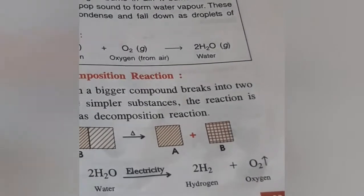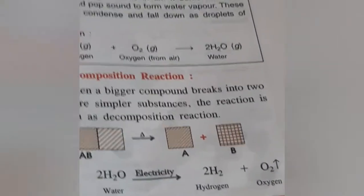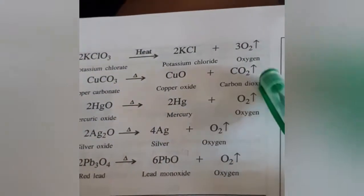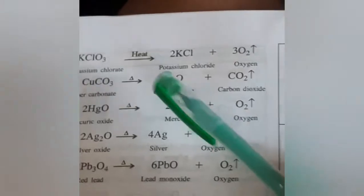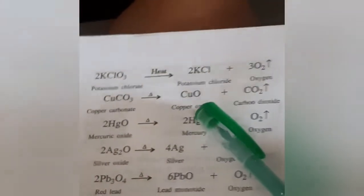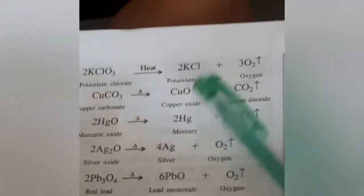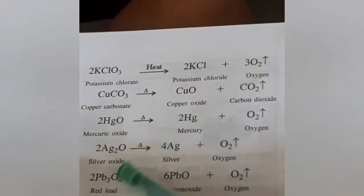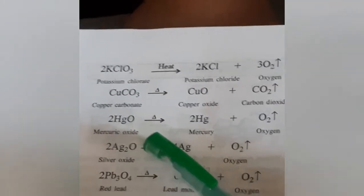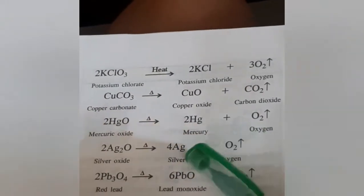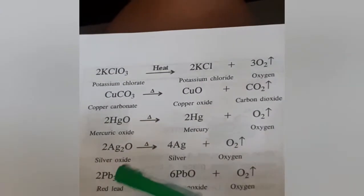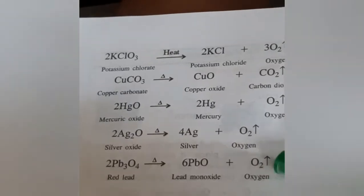These atoms break down and their reactions are changed. Other examples: potassium chloride on heating produces potassium chloride alone and oxygen alone. Copper carbonate on decomposition forms copper oxide alone and carbon dioxide alone. Mercuric oxide on decomposition forms mercury and oxygen. Silver oxide to silver plus oxygen. Red lead into lead monoxide plus oxygen.